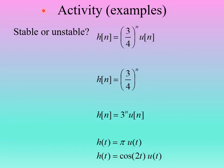Let's finish with five examples. For each of the five impulse responses shown — three discrete-time h(n) and two continuous-time h(t) — determine if the system is stable or unstable. Use the results from the last slide: check whether the impulse response is absolutely summable or absolutely integrable. Please pause the video and try to figure these out on your own, then we'll discuss the answers.